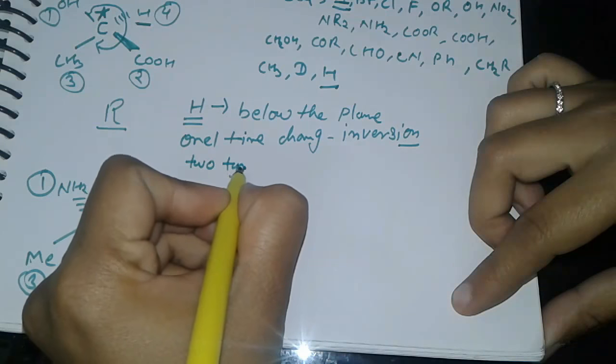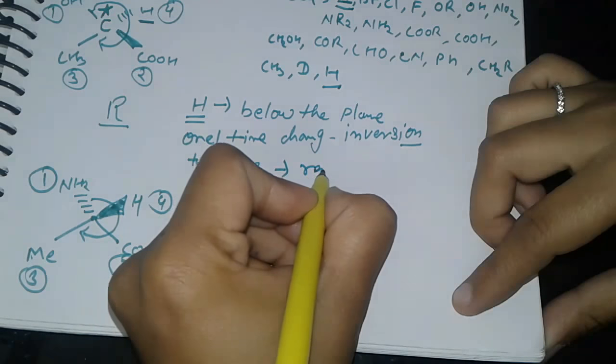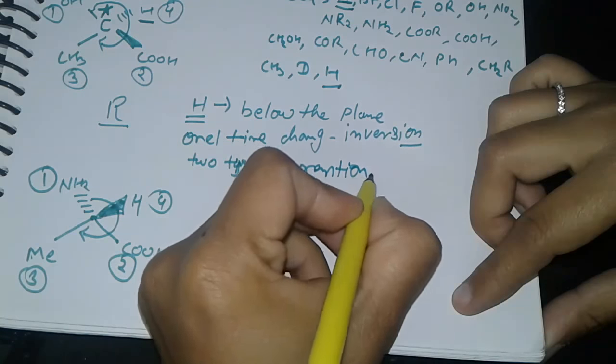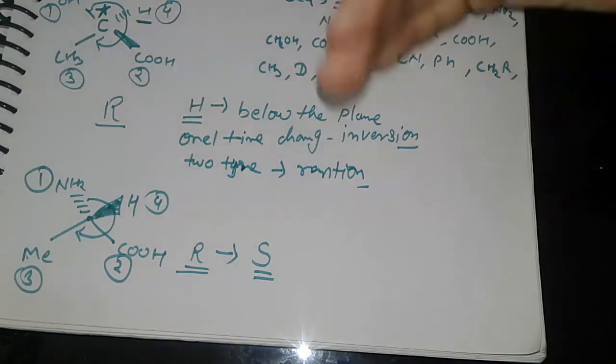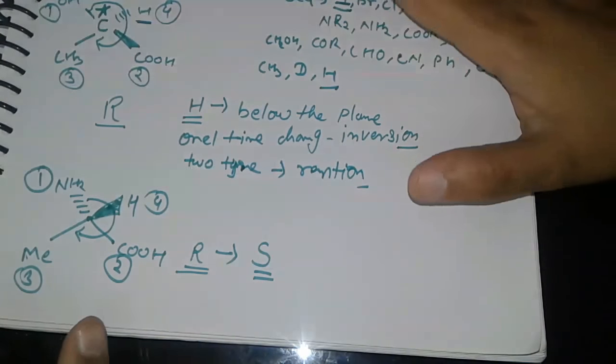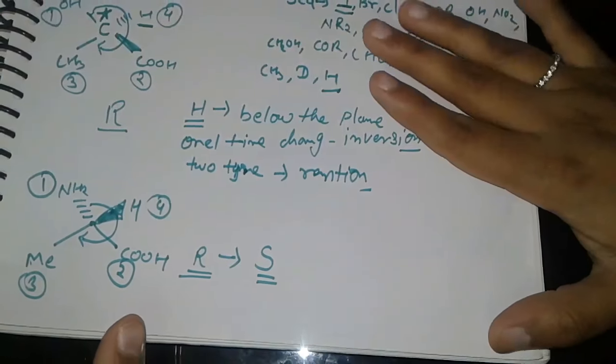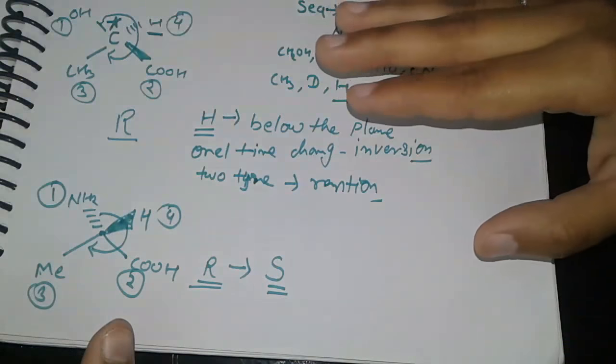So the configuration will be S. The answer is S. So if two time change, then retention; one time change, then inversion. And if already below the plane, then no inversion, only retention of configuration. This is for flying wedge.